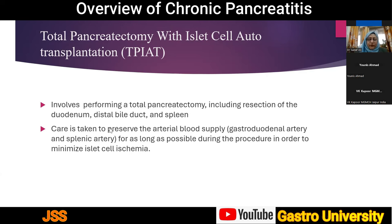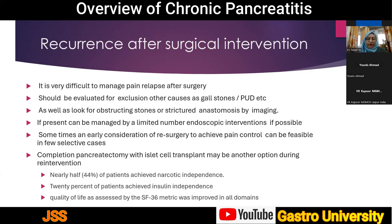In total pancreatectomy with islet cell autotransplantation, the whole pancreas is removed including resection of the duodenum, distal bile duct, and spleen. To minimize ischemia in the context of transplant, it is important to try to preserve the arterial blood supply while dissecting the pancreas to the very end of the procedure.